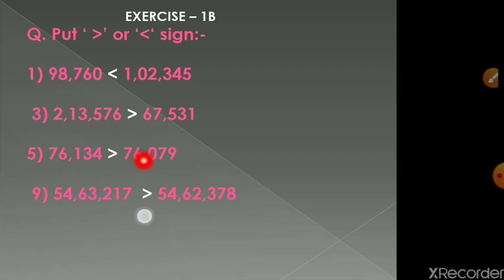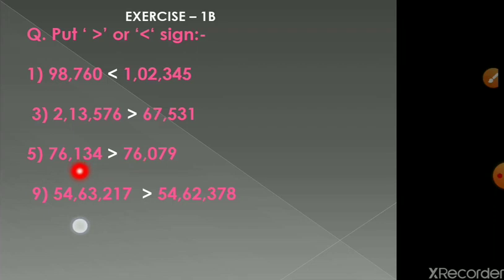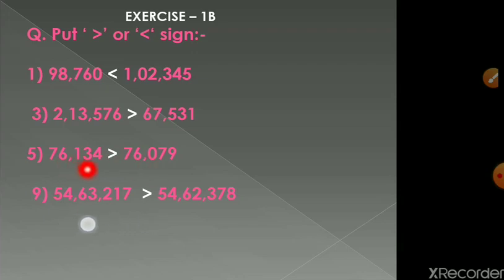Question 5: 76 thousand 134 versus 76 thousand 79. Both are five-digit numbers so we compare each place value. Both numbers start with 76, so those digits are the same. In the hundreds place, the first number has 1 and the second has 0; since 1 is greater than 0, 76134 is greater than 76079.